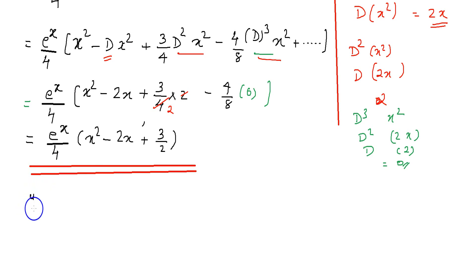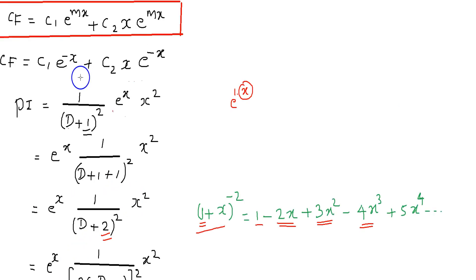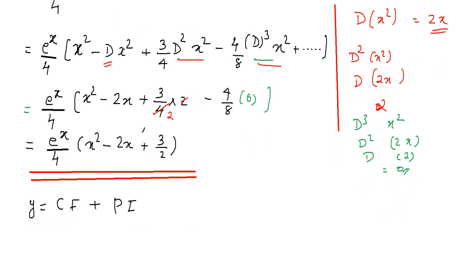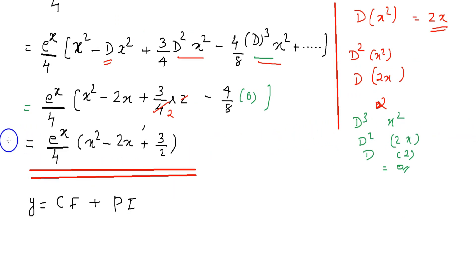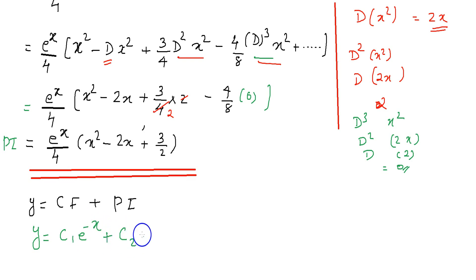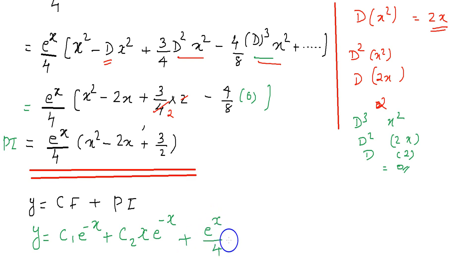Now the complete solution is y equal to complementary function plus particular integral. The complementary function is c₁ e raised to −x plus c₂ x e raised to −x, and the particular integral is e raised to x by 4 into x square minus 2x plus 3 by 2. Therefore y = c₁ e^(−x) + c₂ x e^(−x) + (e^x / 4)(x² − 2x + 3/2).